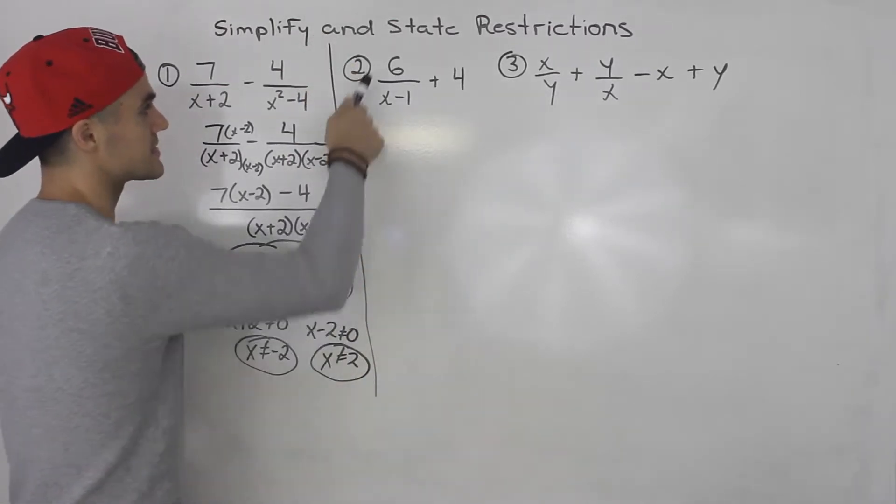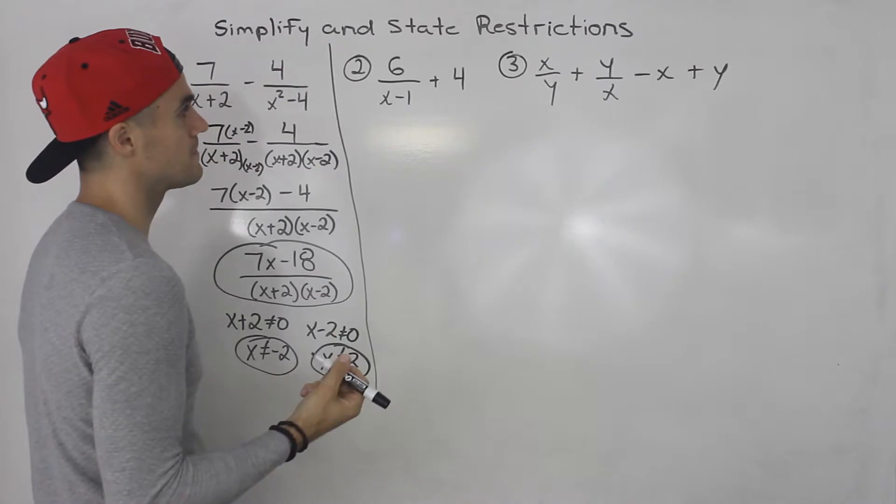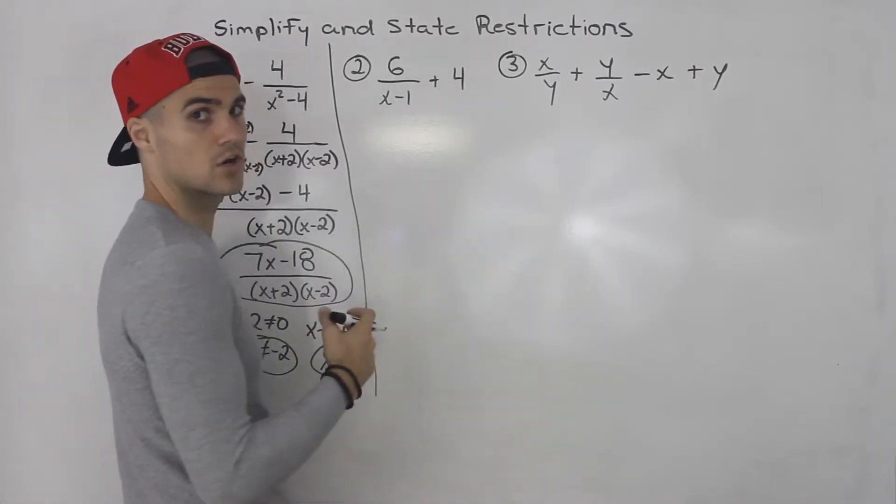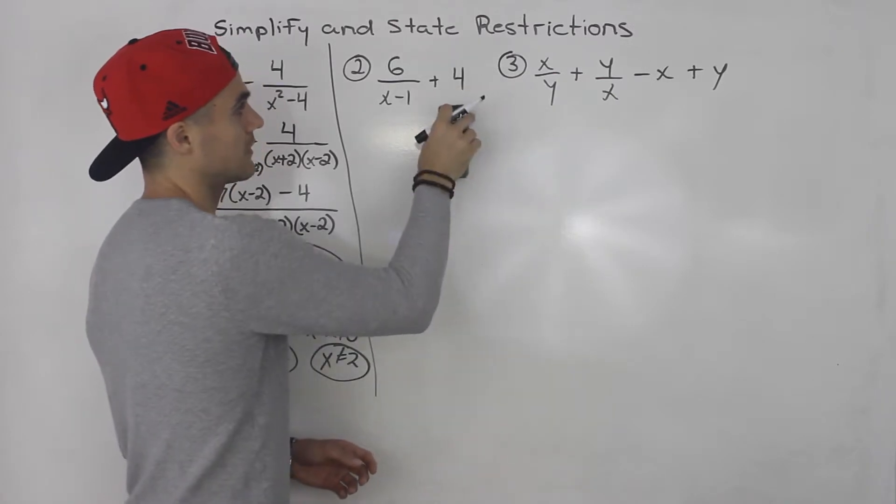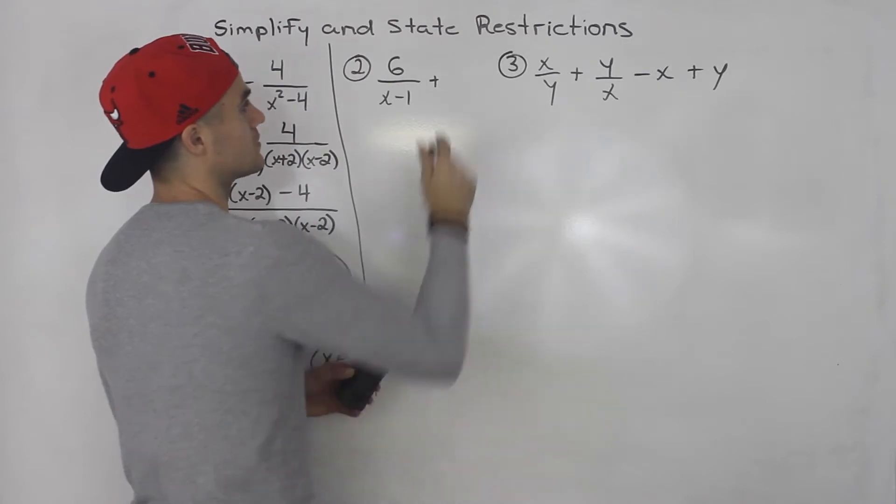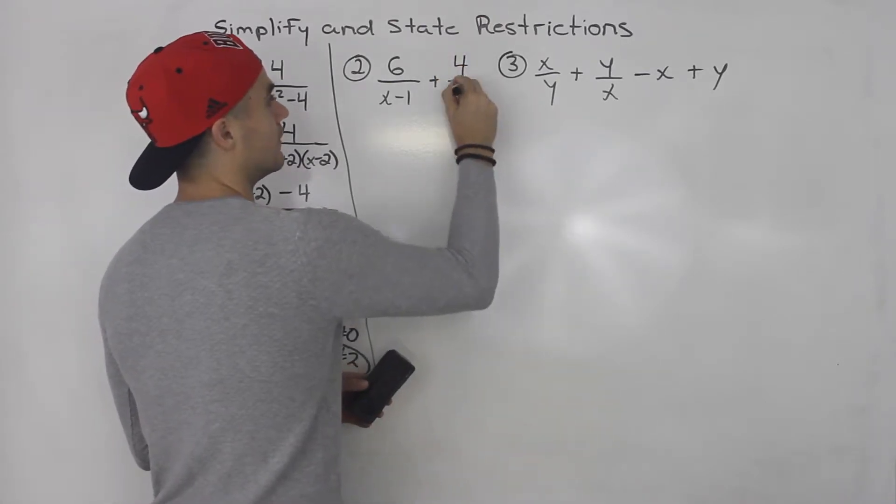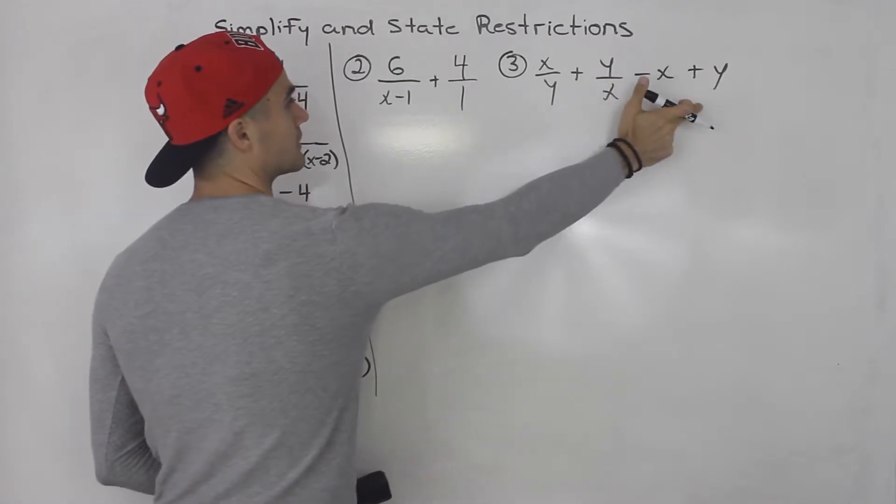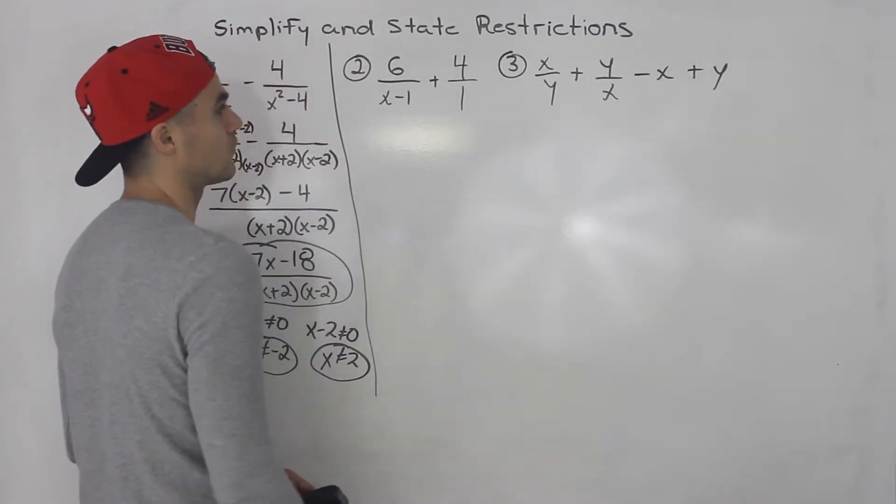Moving on to number 2, we've got 6 over x minus 1 plus 4. Now notice that we're adding a constant here, just one term, it's not a fraction. So whenever you have something like this, what you want to do is you want to put this over 1. You always want to put it over 1 if something is alone like that, or even a constant like a 4 here.